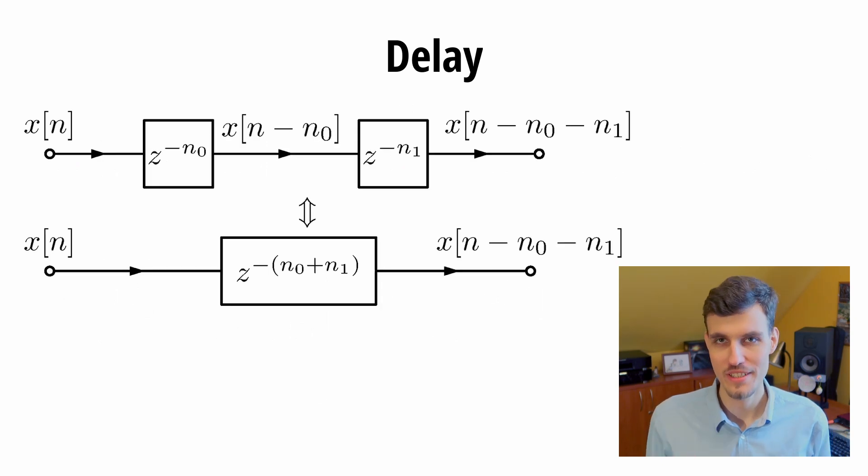Thanks to the associativity property of convolution, arranging delays in a series is equivalent to a single delay of length equal to the sum of individual delay lengths.